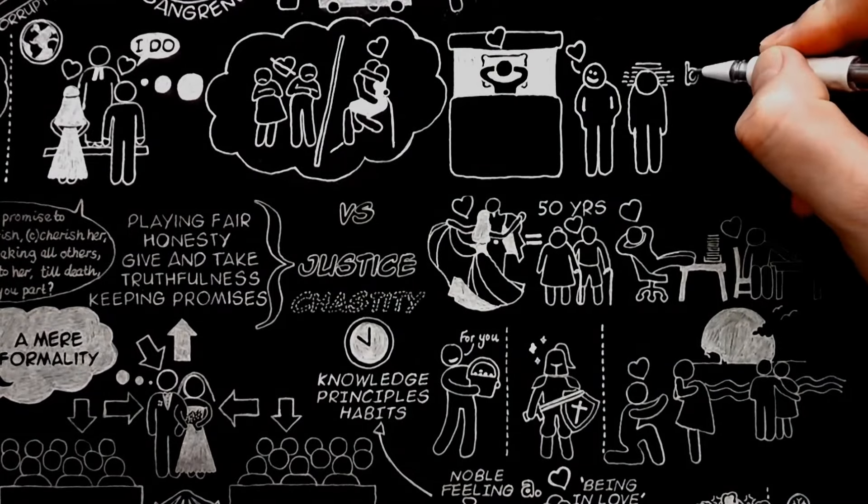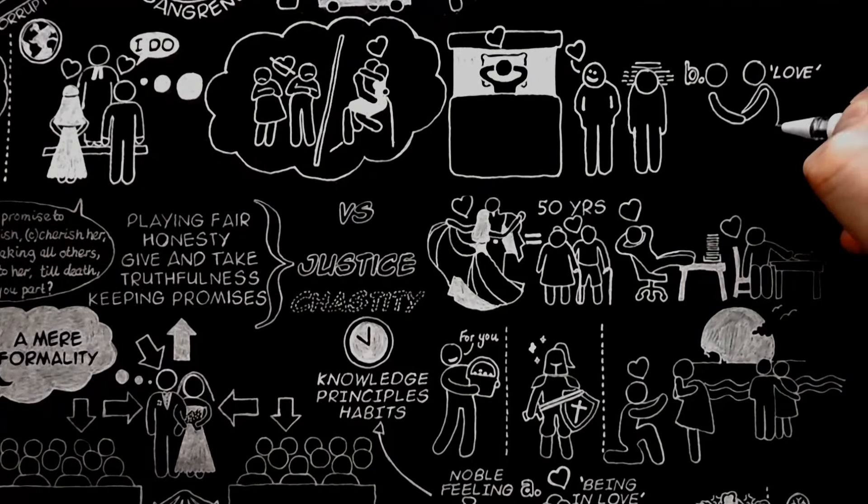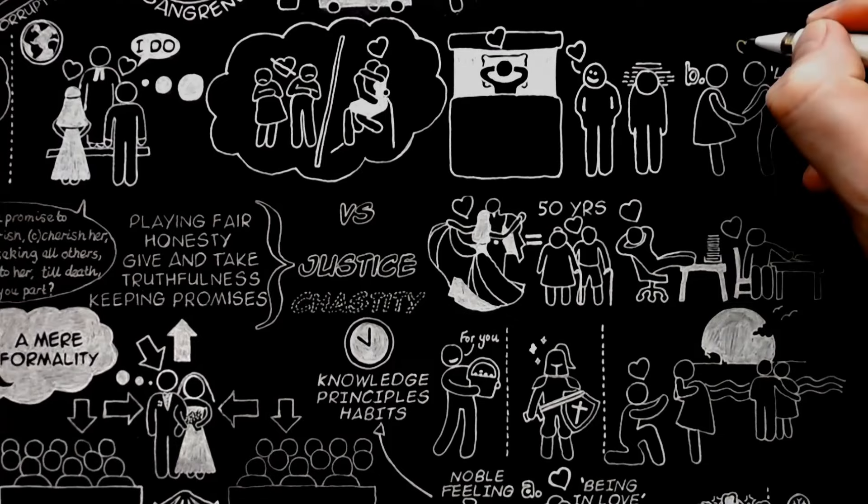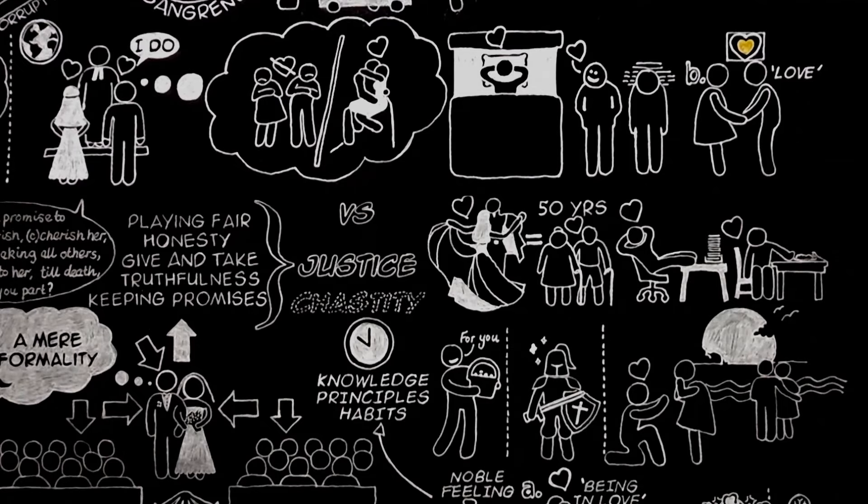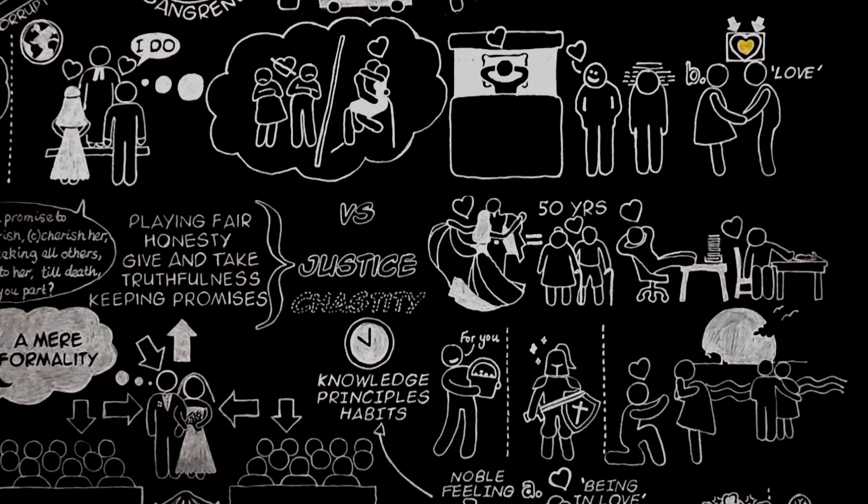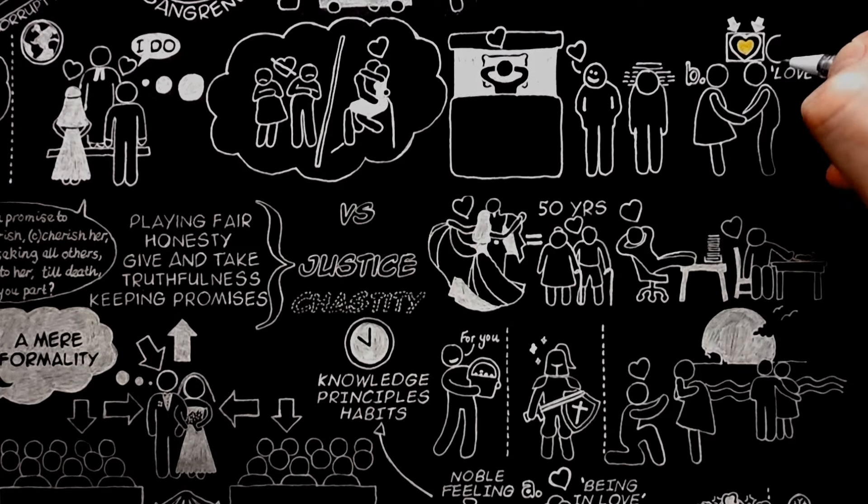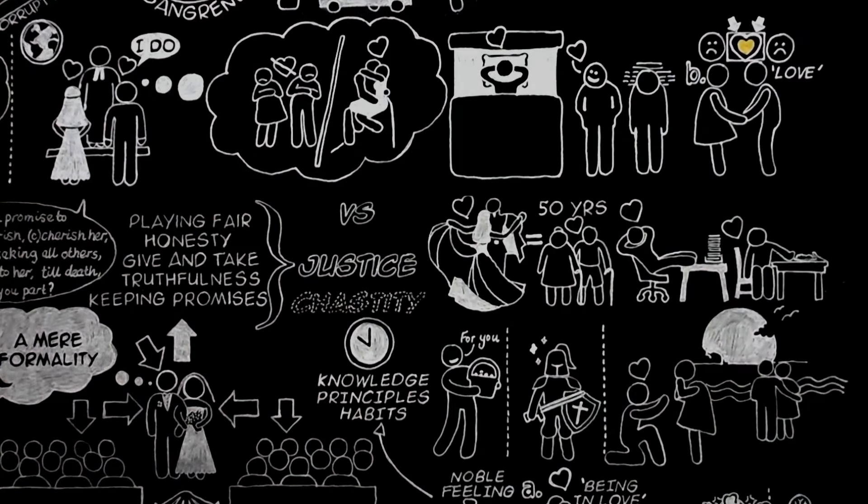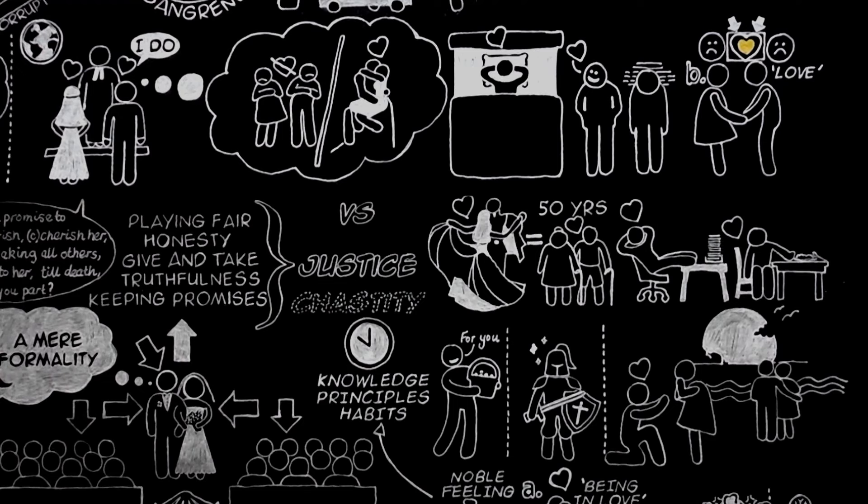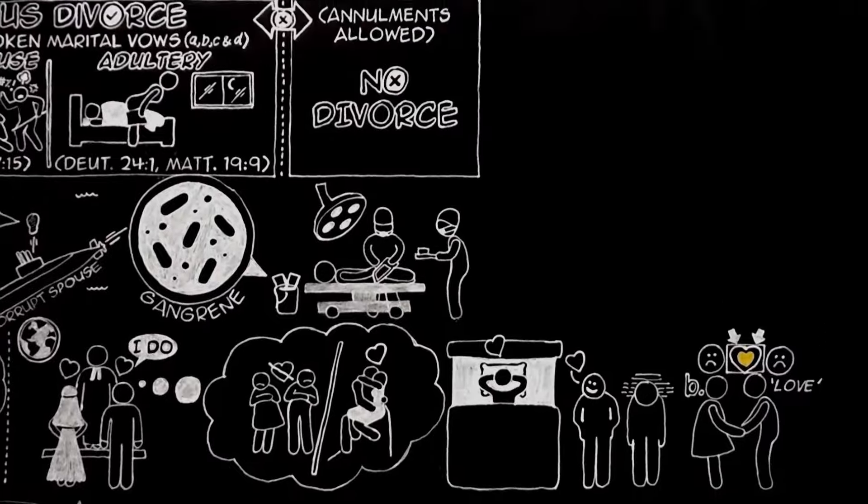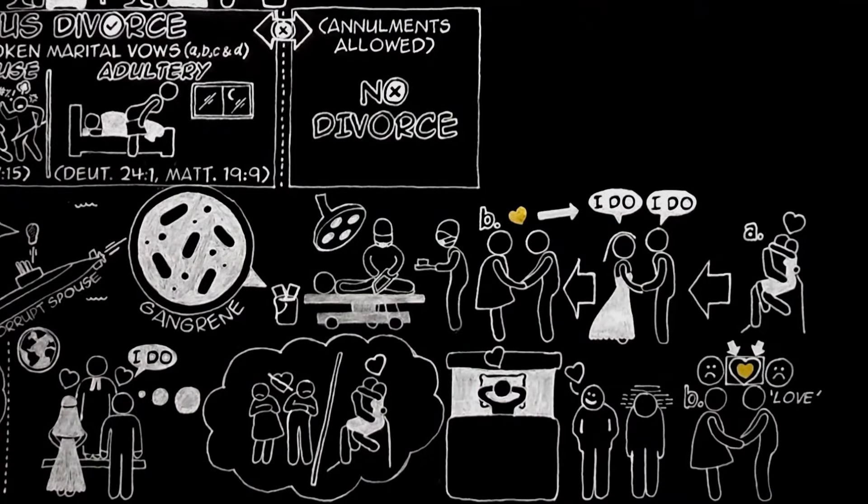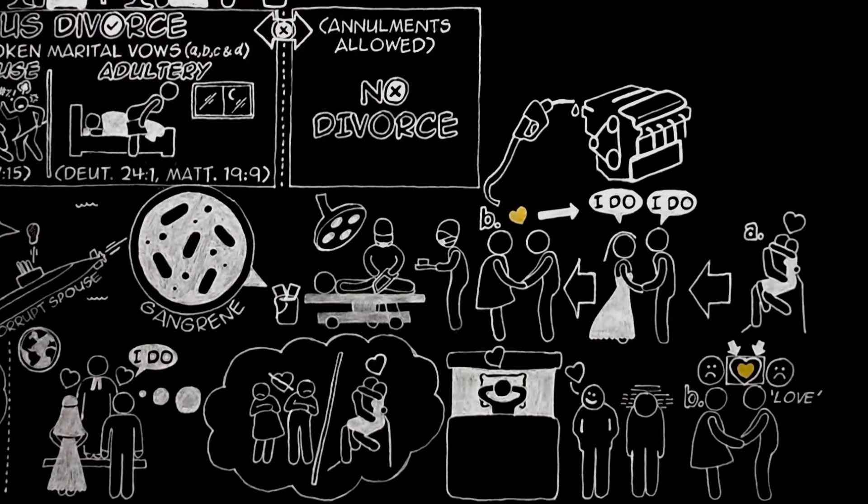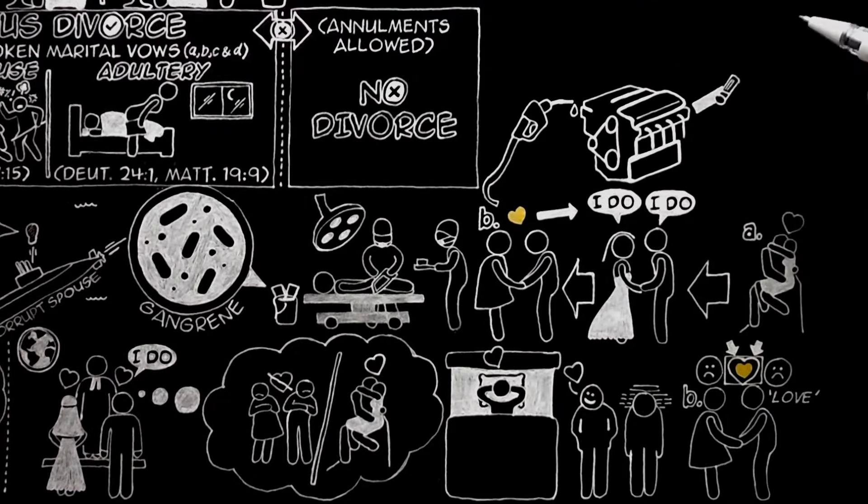Love in this second sense, love as distinct from being in love, is not merely a feeling. It is a deep unity maintained by the will and deliberately strengthened by habit, reinforced by, in Christian marriages, the grace which both partners ask and receive from God. They can have this love for each other even at those moments when they do not like each other, as you love yourself even when you do not like yourself. They can retain this love even when each would easily, if they allowed themselves, be in love with someone else. Being in love first moved them to promise fidelity. This quieter love enables them to keep the promise. It is on this love that the engine of marriage is run. Being in love was the explosion that started it.